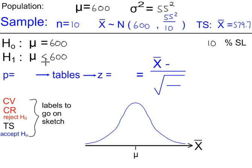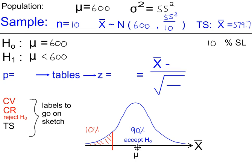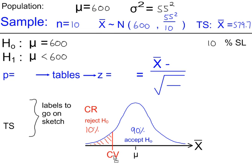Because we're looking for a decrease, we're on the left-hand side of the normal distribution. This 10% is the significance level, so we have 90% on the other side. This is the accept H0 region, this is the reject H0 region, and this is the critical region. We have a critical value here, and our test value will be placed here.